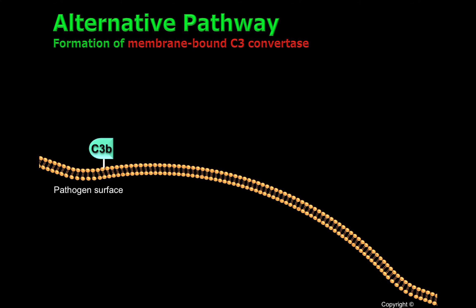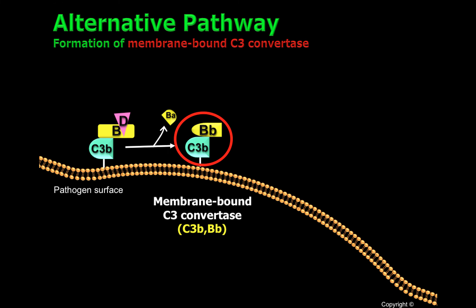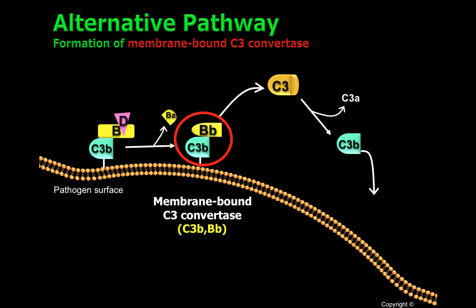C3B is very similar to C3 water, and for that reason is able to be recognized by factor B. Factor B can be cleaved by factor D, generating the membrane-bound C3 convertase, C3B-BB. This convertase will cleave C3, generating C3A, and if C3B is close enough to the surface of a pathogen, it will covalently attach to the surface. This is what we call C3B deposition.